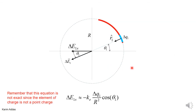Let's get the x-components first. For delta Q1, the x-component delta E1x has a minus sign — if the charge is positive, it will make an electric field pointing to the left. If delta Q is positive and the angle is less than 90 degrees, the cosine is positive, so the negative sign is important to make the sign come out correct. This equation can only be used exactly for a point charge, so this is an approximation.